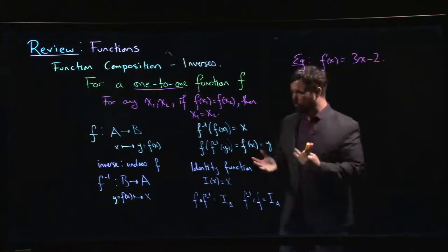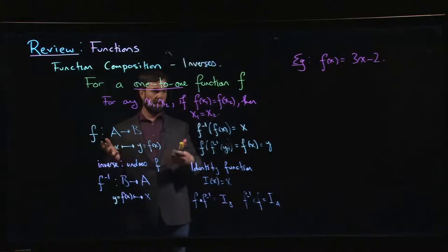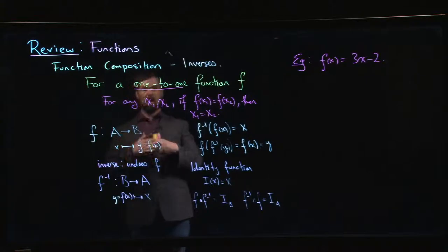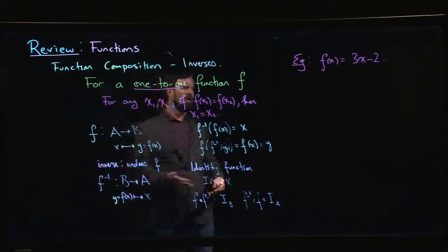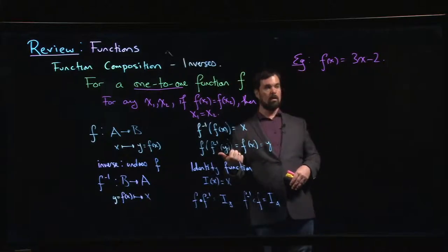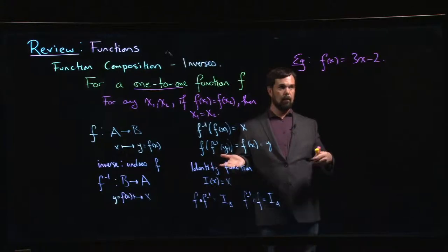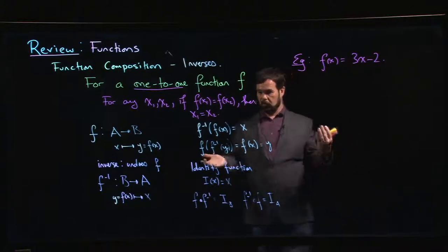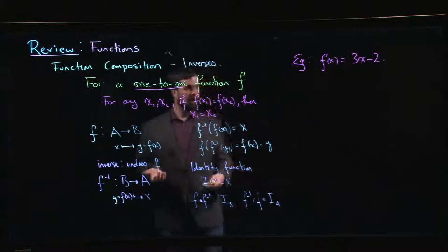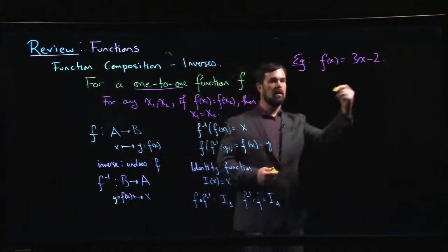So if you were trying to undo that function, just like the undo key if you're working on a word processor or something like that, you always undo in the opposite order. You undo the most recent thing first. So first thing I'd have to do is I'd have to get rid of the minus 2. So I'd have to add 2. That would cancel out the fact that I subtracted 2. Then to cancel out the fact that I multiplied by 3, I'd have to divide by 3. So that tells me that I should be able to reverse this function.